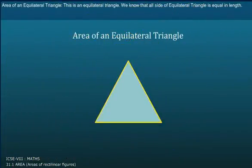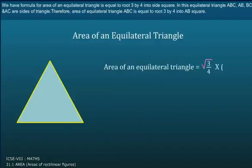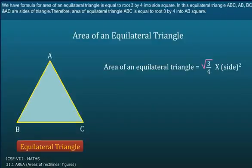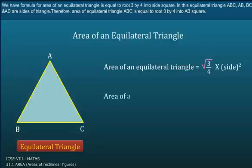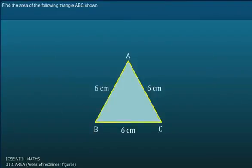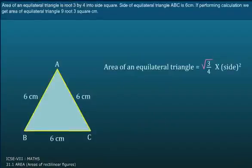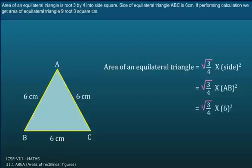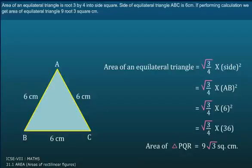Area of an Equilateral Triangle. All sides of an Equilateral Triangle are equal in length. The formula for Area of an Equilateral Triangle is equal to √3/4 into side squared. In this Equilateral Triangle ABC, AB, BC and AC are the sides of the triangle. Therefore, Area of Equilateral Triangle ABC is equal to √3/4 into AB squared. Find the Area of Equilateral Triangle ABC as shown. Side of Equilateral Triangle ABC is 6 centimeter. While performing calculation, we get Area of Equilateral Triangle is 9√3 square centimeter.